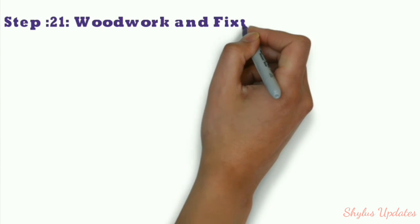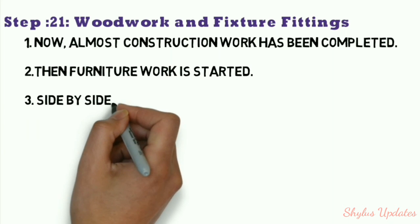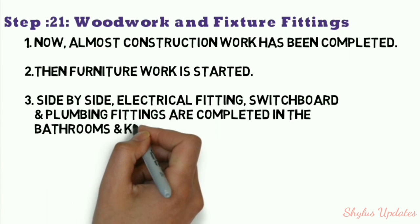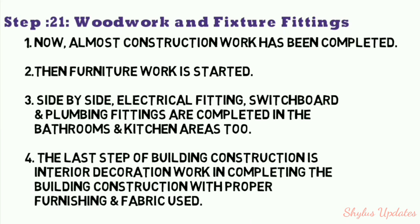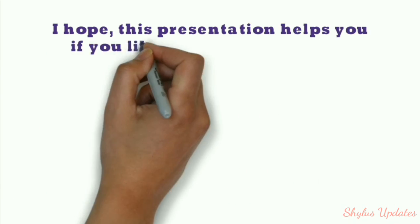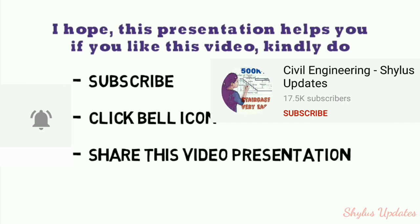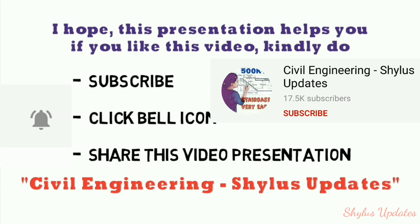Step 21: Woodwork and fixture fittings. Construction work is now almost complete. Furniture work is started as the next step. Electrical fittings, switchboards, and plumbing fittings are completed in bathrooms and kitchen areas. The last step is interior decoration work, completing the building construction with proper furnishing and fabric. I hope this presentation helps you — kindly subscribe, click the bell icon, and share this video from Civil Engineering Shilu's Updates.